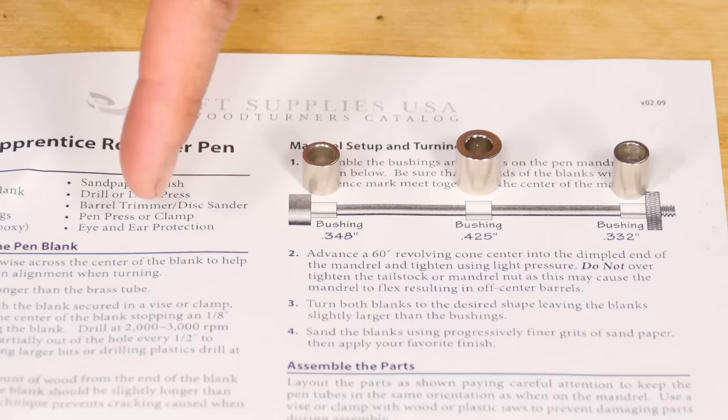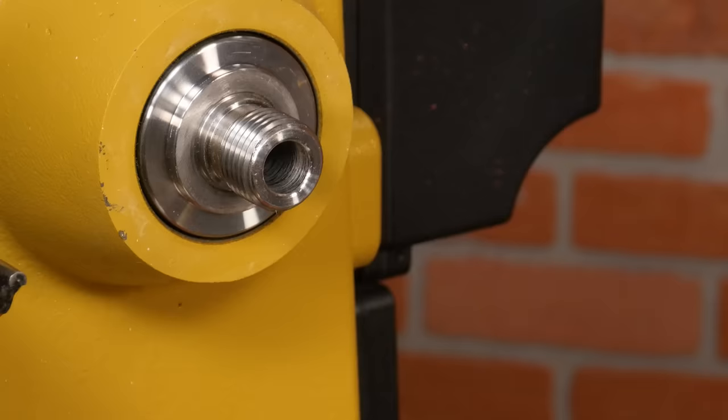Now that the blanks are glued and trimmed we can mount them on the lathe. Before mounting your pen blanks on the pen mandrel, reference the instructions for the proper bushing layout and this is important because the bushings help you size your turning correctly.